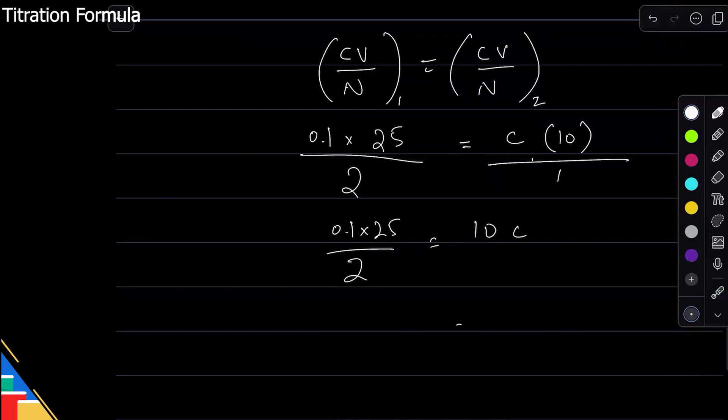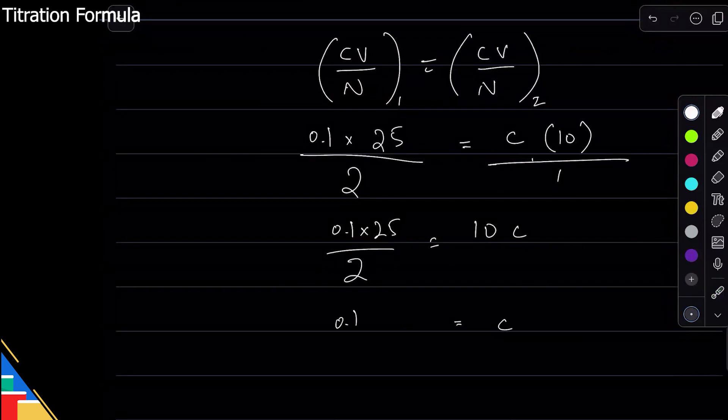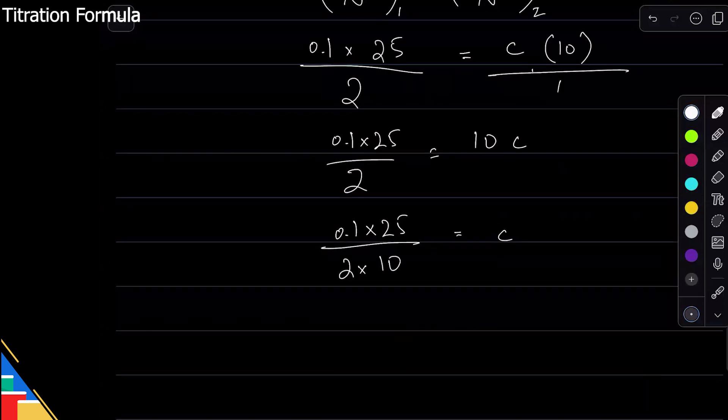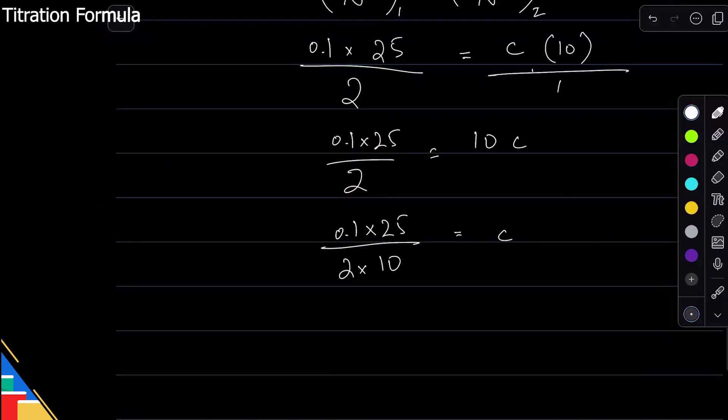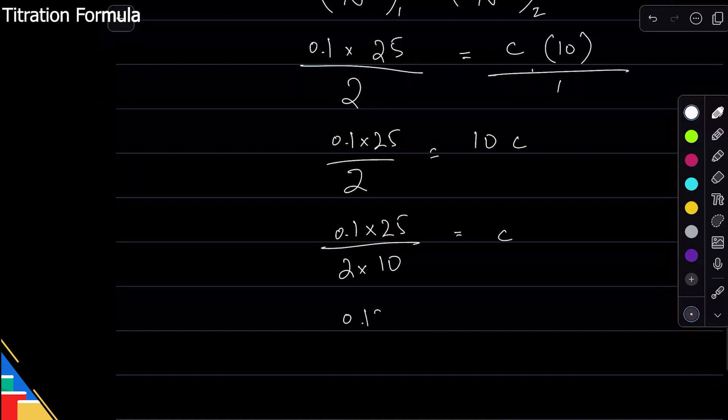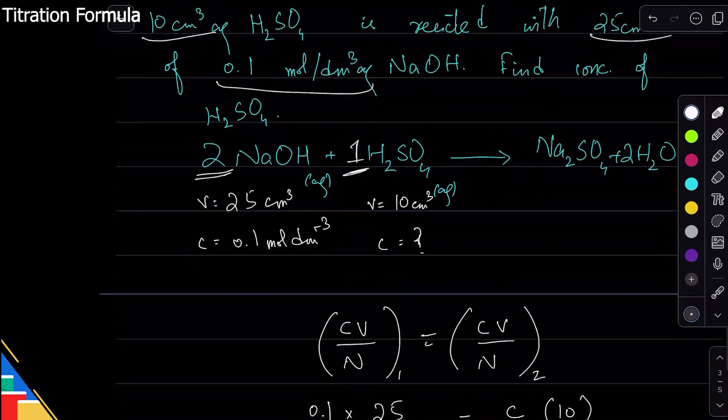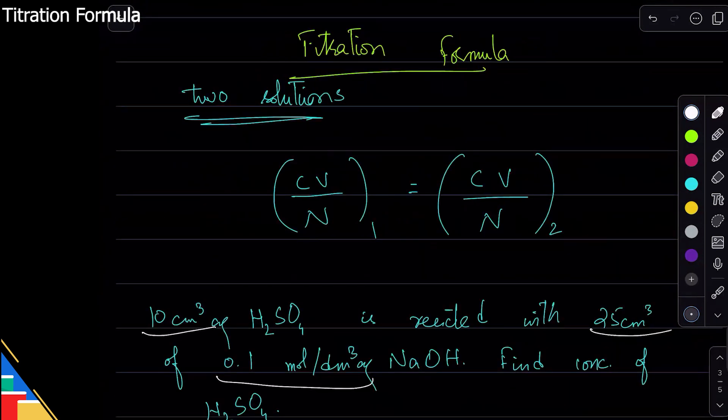So C comes out to be 0.1 times 25 over 2 times 10. Notice that I did not do any calculation - even if it is easy, I don't care about that. I will simply put that all in the calculator. So 0.1 multiplied by 25 divided by 2 times 10: 0.125 mole dm⁻³. Whenever you have two solutions reacting, you can use the titration formula and that will make things much easier for you.